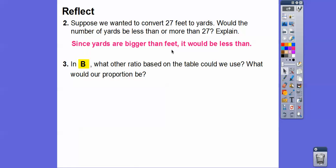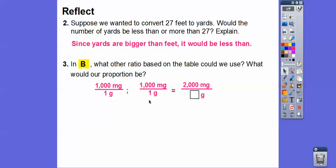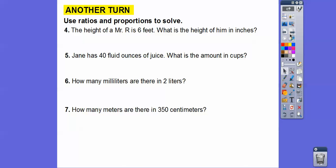In section B, what other ratio could we have used? We used one gram to 1,000 milligrams. We could just flip it upside down: 1,000 milligrams to one gram. Then we'd put the 2,000 milligrams on top and get two grams still. It doesn't matter which ratio you set up — just make sure you're consistent on the other side.